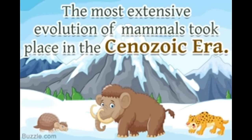The term Cenozoic has been derived from the Greek words — canos meaning new and zoe meaning life. It is the shortest era of the Earth, spanning from about 66 million years ago to the present. After the sudden KT boundary mass extinction, mammals got a chance to evolve extensively in this era, and hence it is also called the Age of the Mammals.